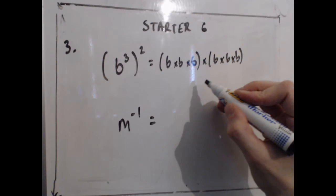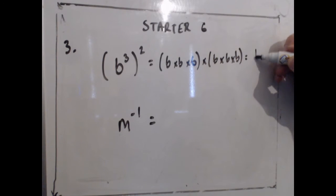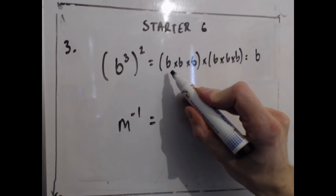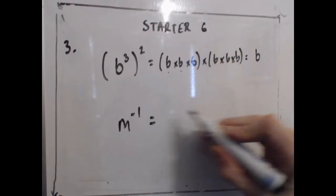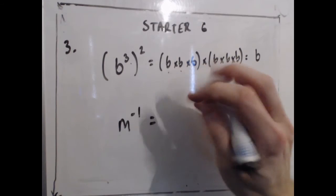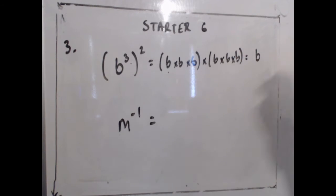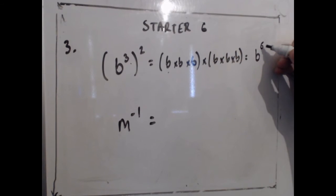That's that expanded out properly, and if we now look at how many b's are being multiplied together, we can count 1, 2, 3, 4, 5, 6. That is indeed 3 times 2, so we don't need to do this, this is just a visual representation, but 3 times 2 gives me 6, and that's how many b's I'm multiplying together.